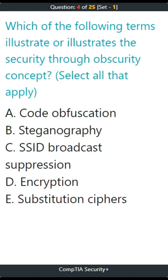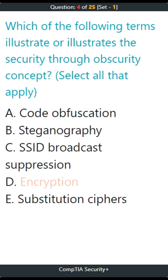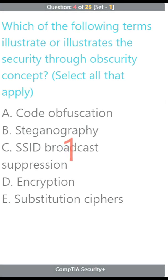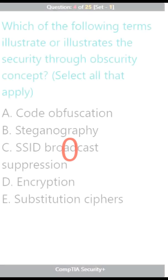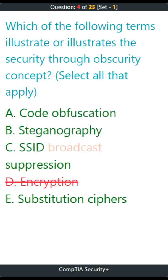Question 4. Which of the following terms illustrate the security through obscurity concept? Select all that apply. A. Code Obfuscation, B. Steganography, C. SSID Broadcast Suppression, D. Encryption, E. Substitution Ciphers. The correct answers are A. Code Obfuscation, B. Steganography, C. SSID Broadcast Suppression, E. Substitution Ciphers.